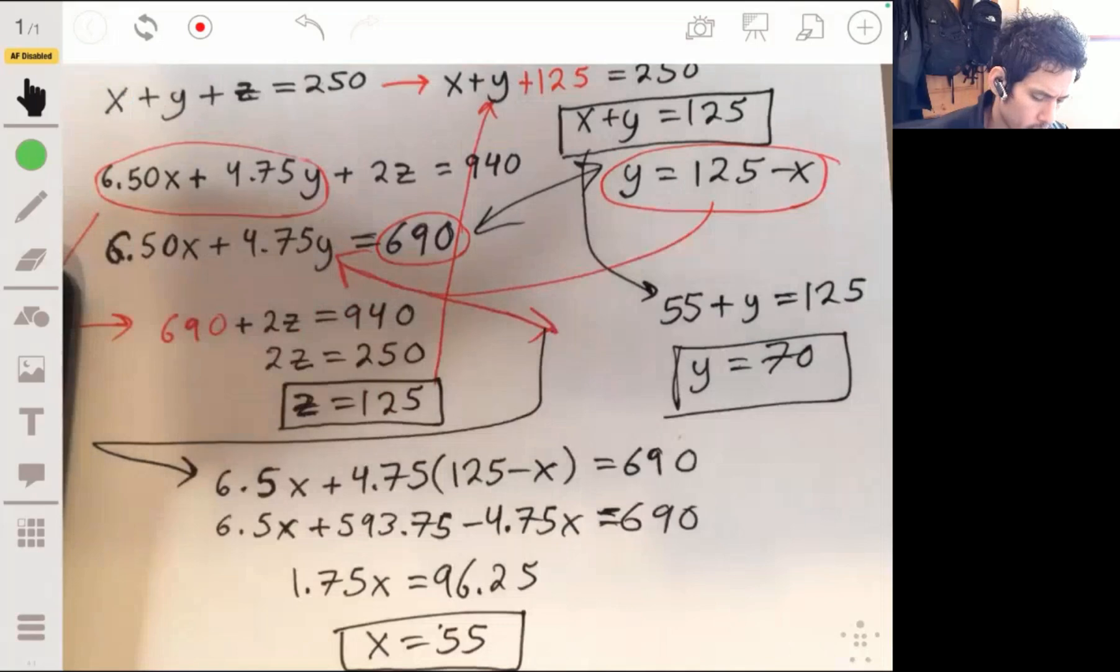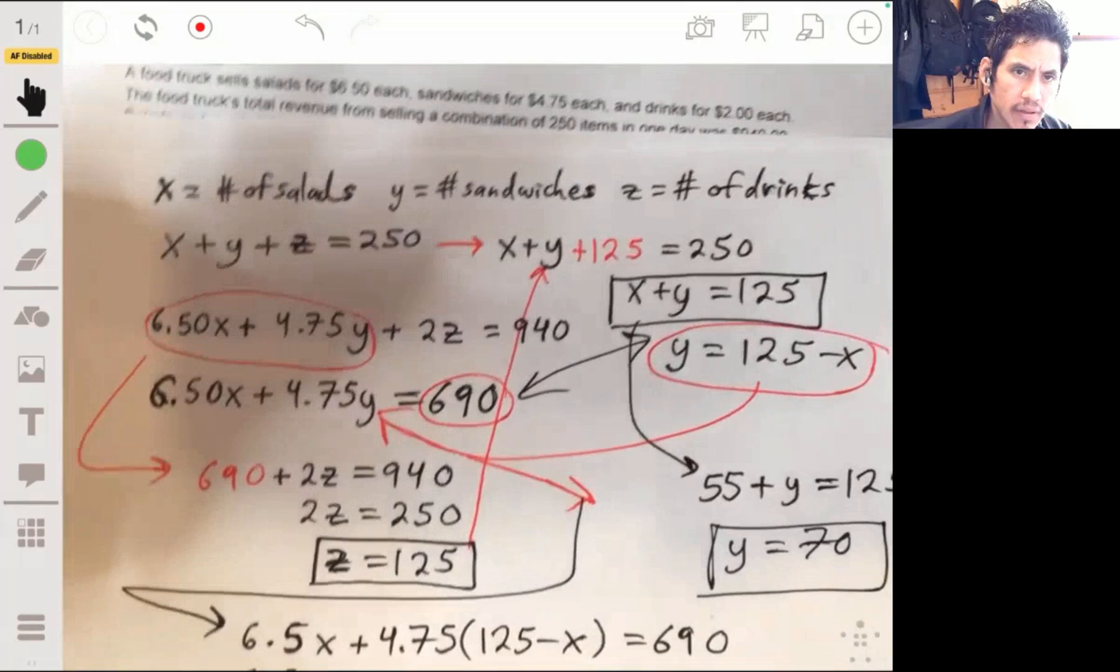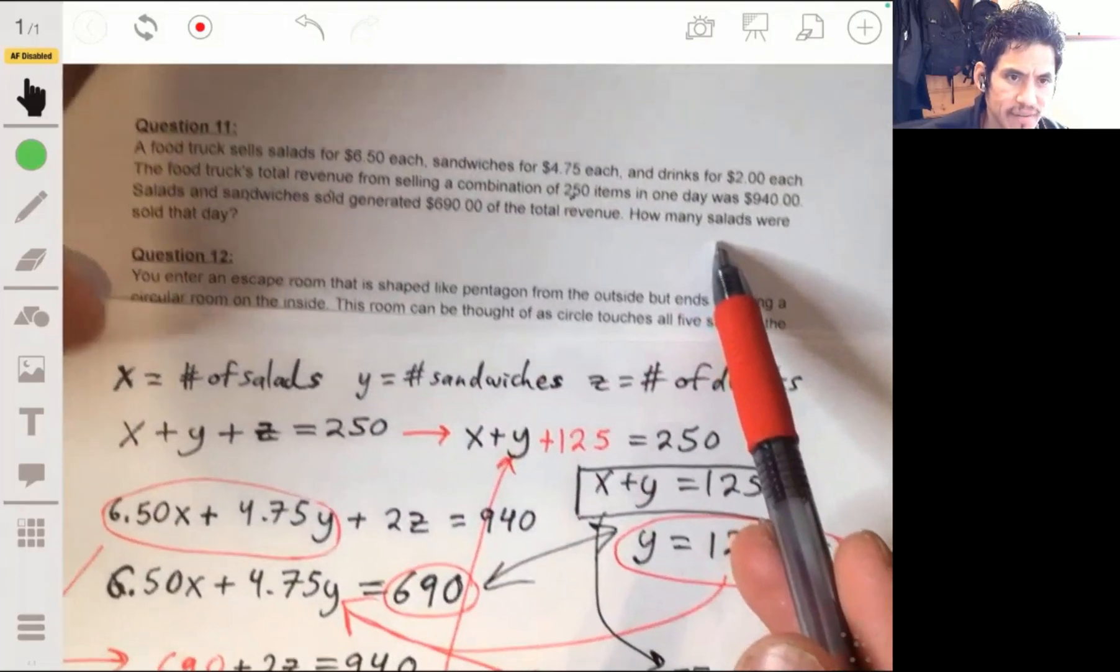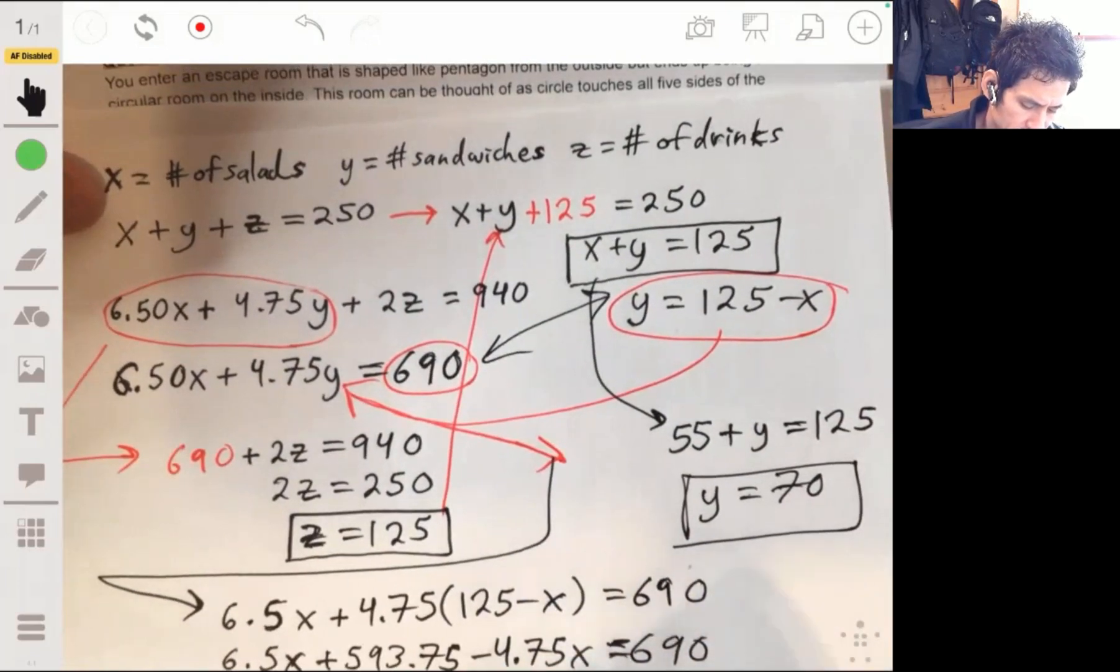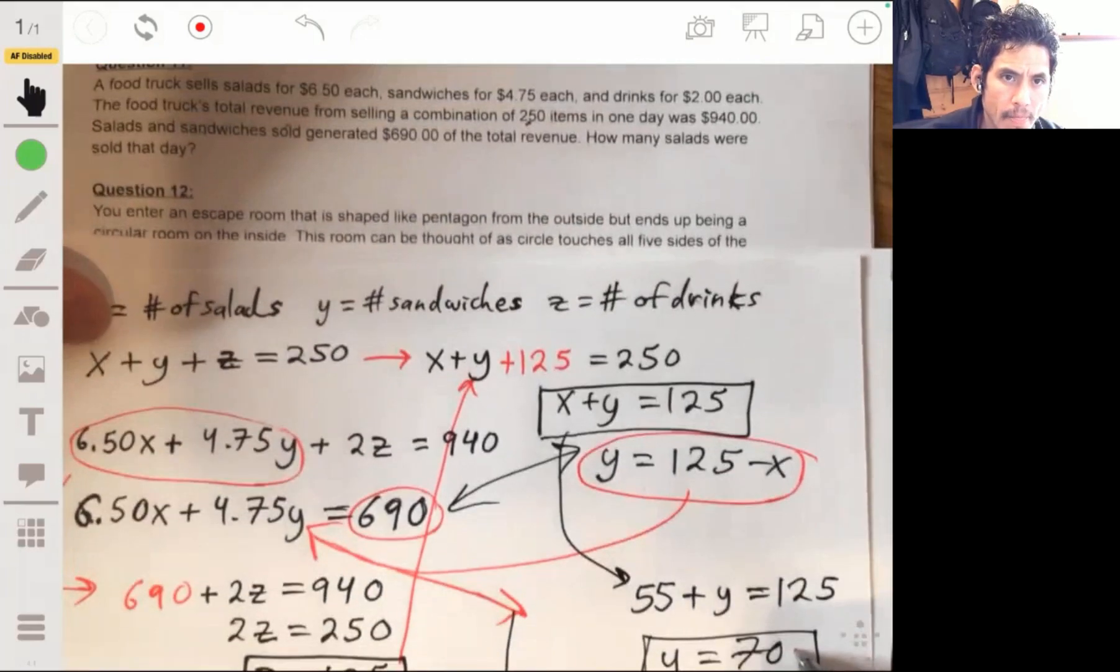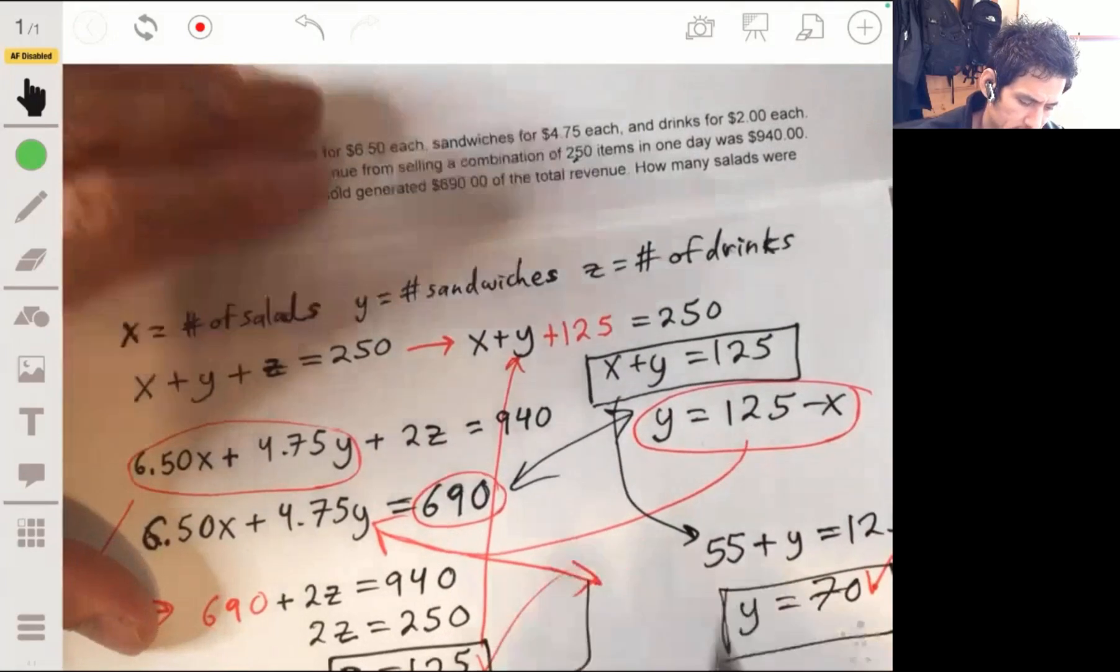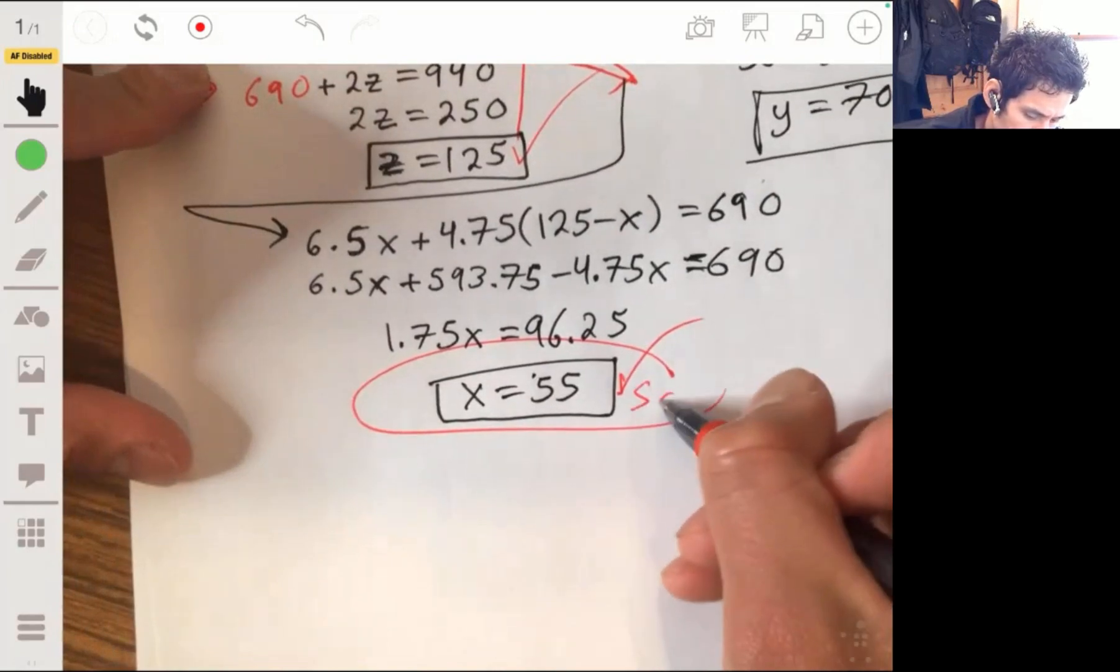And there you go. And I realize why I was confusing myself because we're solving for X, which is the number of salads, so we already have it, which is 55, but we got all three. Number of salads is 55, number of sandwiches is 70, and then we found the number of drinks, 125. Okay, so then they're asking how many salads were sold that day, and your answer is officially 55 salads.